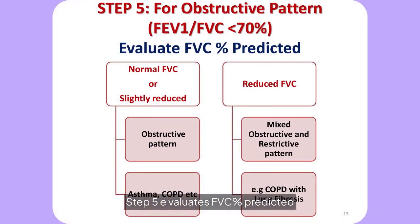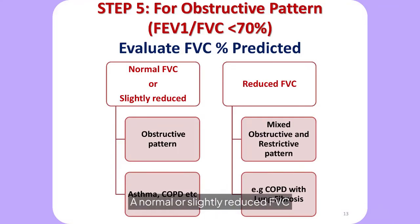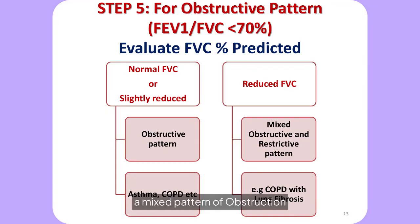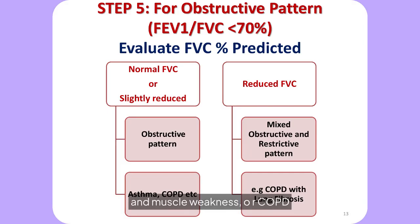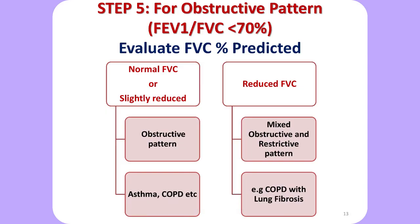If step one shows an obstructive pattern with FEV1/FVC below 70%, step five evaluates FVC percent predicted. A normal or slightly reduced FVC indicates a pure obstructive pattern, while a reduced FVC suggests a mixed pattern of obstruction and restriction coexisting. This distinction is important in diseases like bronchiectasis, advanced COPD with hyperinflation and muscle weakness, or COPD with lung fibrosis.